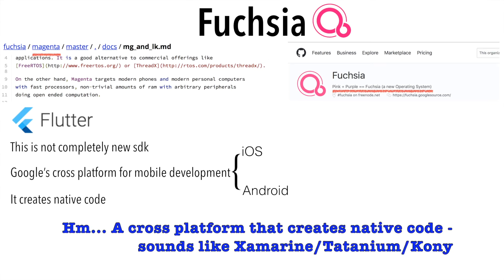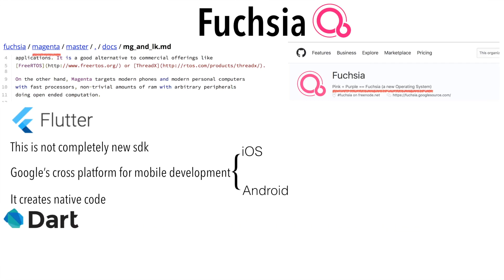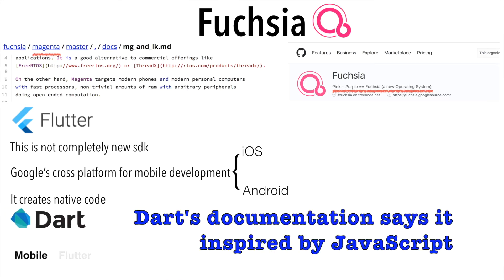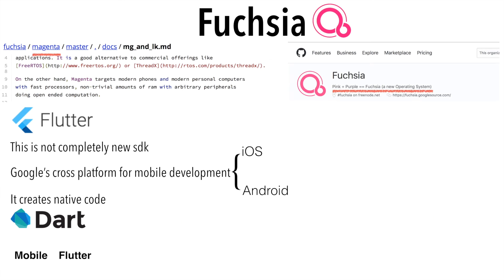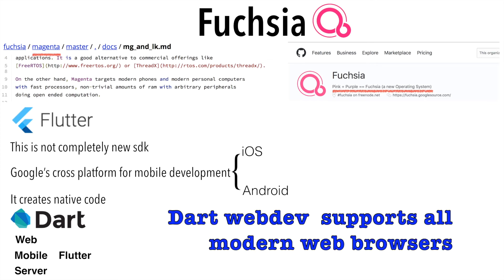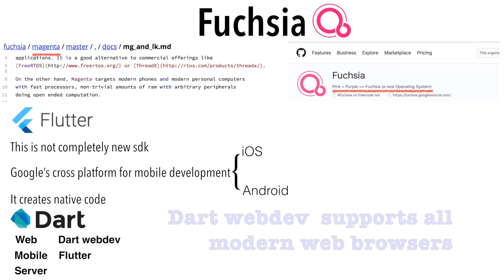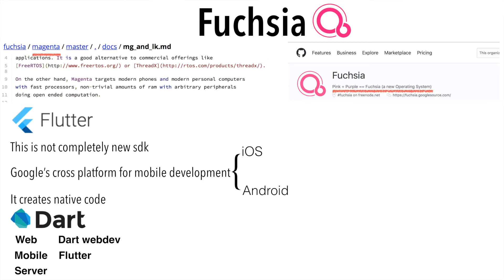If you are wondering what is the programming language used, it is called Dart. Dart is used for mobile application development in Flutter. However, Dart is not meant for just mobile app development — you can also build web and server-side applications. For web, there is a framework called Dart Web Development, and for server-side development, they have another framework called Dart VM.